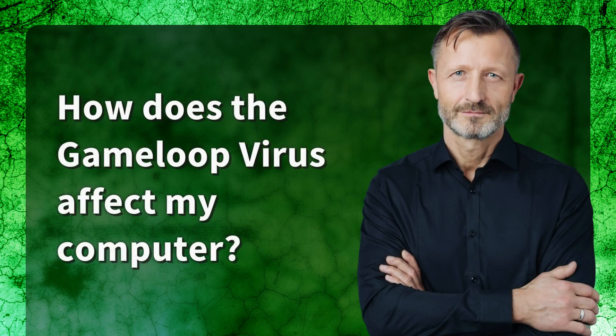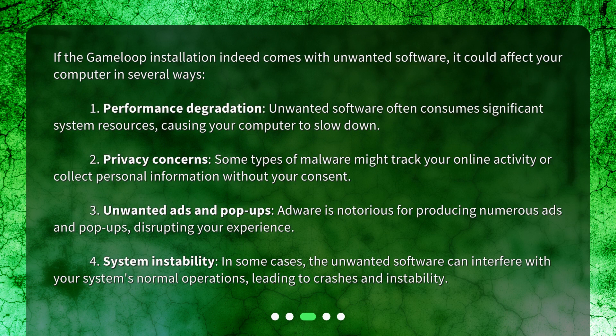How does the game loop virus affect my computer? If the game loop installation indeed comes with unwanted software, it could affect your computer in several ways. 1. Performance degradation — unwanted software often consumes significant system resources, causing your computer to slow down. 2. Privacy concerns — some types of malware might track your online activity or collect personal information without your consent. 3. Unwanted ads and pop-ups — adware is notorious for producing numerous ads and pop-ups, disrupting your experience. 4. System instability — in some cases, the unwanted software can interfere with your system's normal operations, leading to crashes and instability.